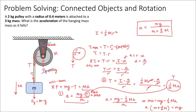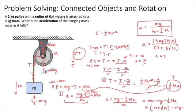Plugging in the values: the hanging mass is 3 kilograms, g is 9.8, and one half times the pulley mass (2 kg) is 1. So the numerator is 3 times 9.8, and the denominator is 3 plus 1. The acceleration equals 7.35 meters per second squared. That is our numerical answer.